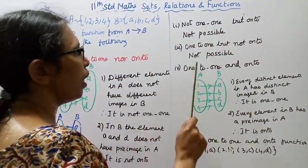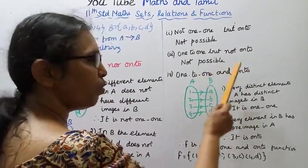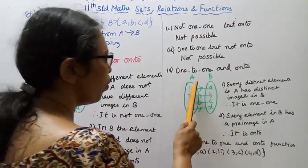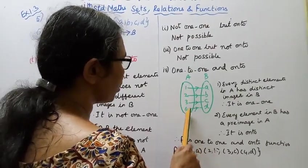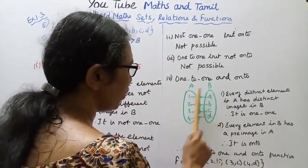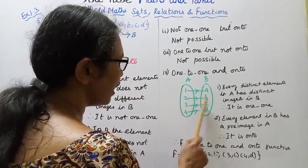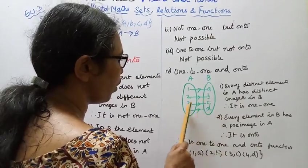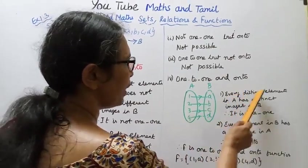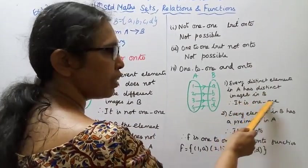Third: 1-to-1 but not onto. Fourth: 1-to-1 and onto. For 1-to-1 and onto, every distinct element maps to a distinct element. 1 maps to A, 2 to B, 3 to C, 4 to D. Every distinct element in A has distinct images in B. Therefore it is 1-to-1.